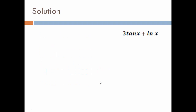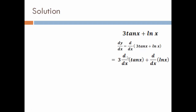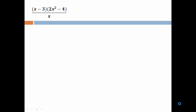Third example: 3tan x + log x. dy/dx equals d/dx of the expression. Since 3 is a constant, d/dx of tan x gives sec²x, so 3·sec²x; and d/dx of log x gives 1/x. Final answer: 3sec²x + 1/x.